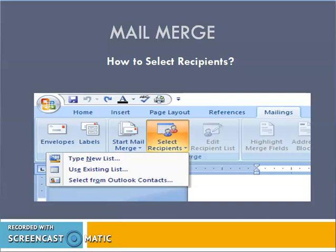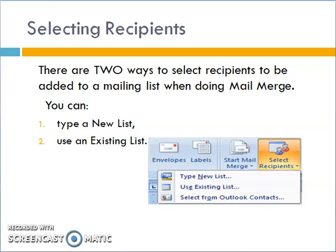Welcome back to the channel. Today we're doing a follow-up to the mail merge video by looking at how to select recipients. Once we start a mail merge, the next thing we need to do is select our recipients. There are two ways to select recipients to be added to a mailing list when doing mail merge: we can type a new list, or we can use an existing list.